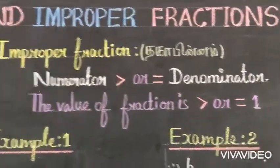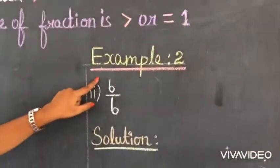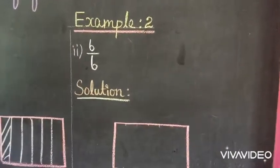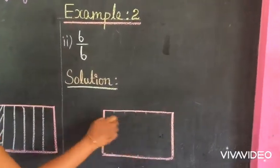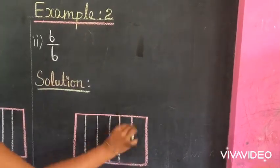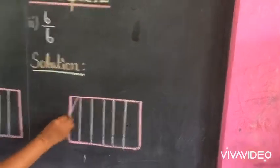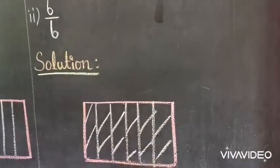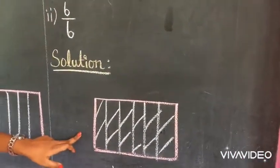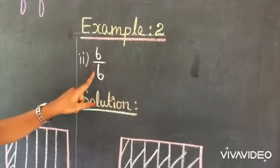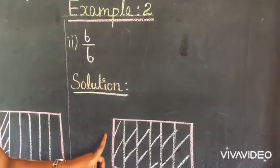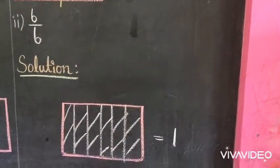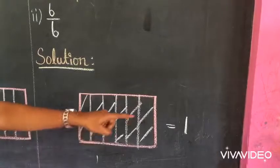Now let us see one more example: 6 by 6. Here, 6 by 6 represents one thing divided into 6 equal parts and we share 6 parts. What is the fraction of the shared part here? 6 by 6, which is equal to 1. That is, here all the parts are shared.